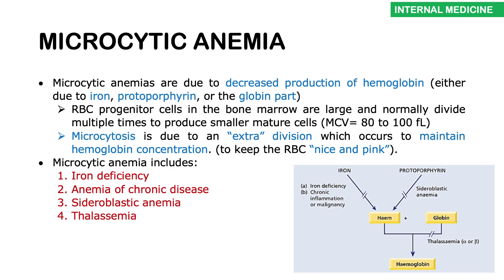Iron deficiency anemia falls under the bracket of microcytic anemia. This is not a general lecture on anemia — I'm zeroing in and focusing on iron deficiency anemia, so I won't be covering indices and classifications. We'll jump straight into iron deficiency. Before getting into any details, remember this is a type of microcytic anemia, and whenever I want you to think of microcytic anemia, I want you to think of hemoglobin.